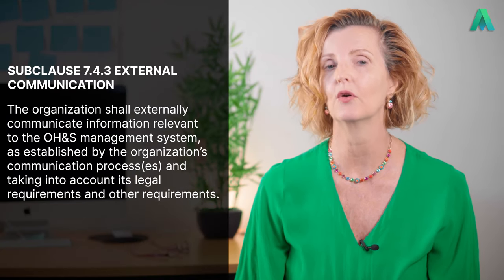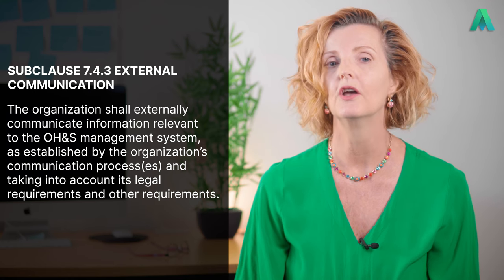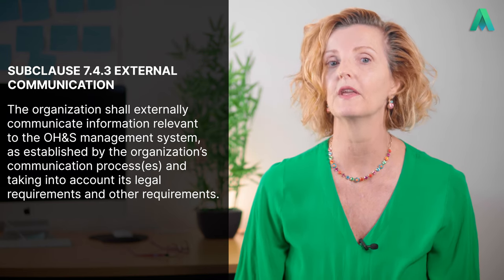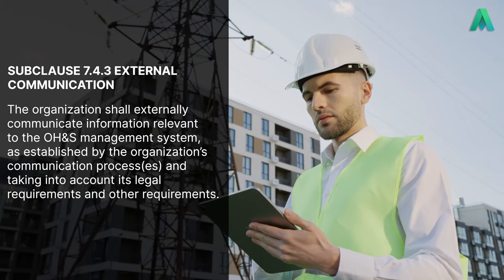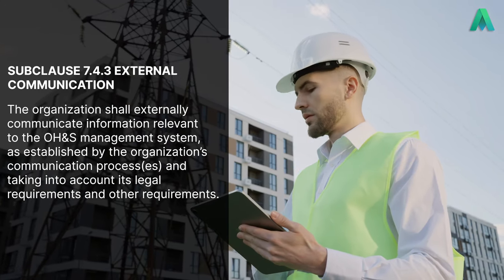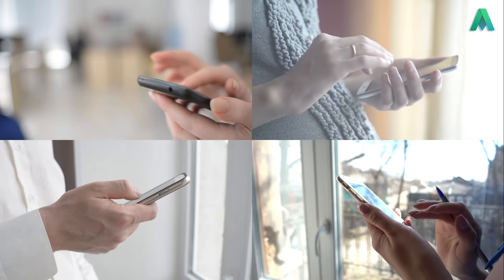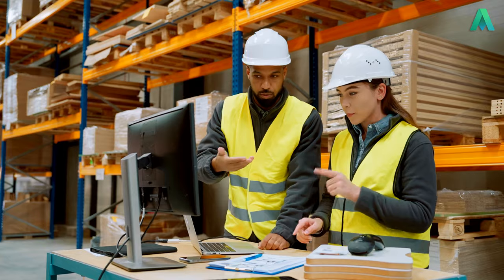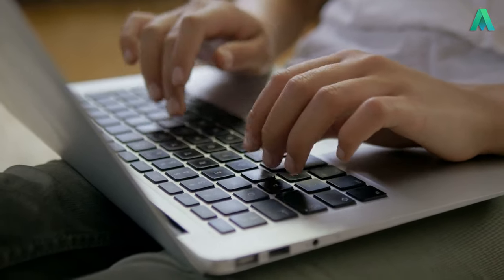Finally, let's touch on clause 7.4.3 External Communication. This sub-clause states that the organisation shall externally communicate information relevant to the OH&S management system as established by the organisation's communication processes and taking into account its legal requirements and other requirements. This clause asks you to figure out your strategy for communicating with external parties — that could be anyone from regulators, suppliers, customers or the general public. If you're dealing with suppliers, maybe you want to communicate your OH&S plan and ask how they can align with that plan. If it's a regulatory body, you might be sending over compliance data or incident reports. The point is you decide what makes sense for your organisation based on what you identify as the needs and expectations of those interested parties. But make sure you've got a record of it.